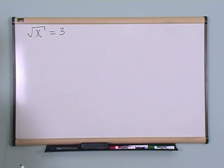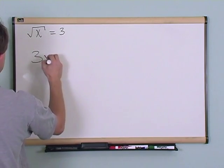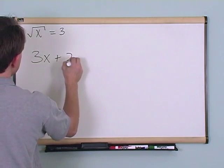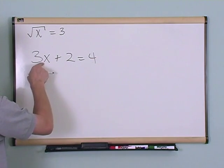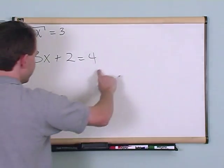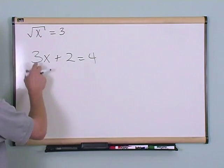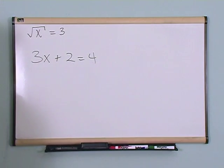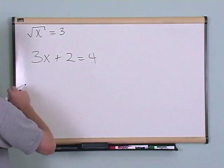As is true anytime you're trying to solve an equation, what you're trying to do is get x by itself. So just as a refresher, if you have 3x plus 2 is equal to 4, what you need to do to get x by itself and solve for x is to get rid of this 2, which we do by subtracting 2 from both sides. And then after that's done we divide both sides by 3. And when we do that we will have x by itself.